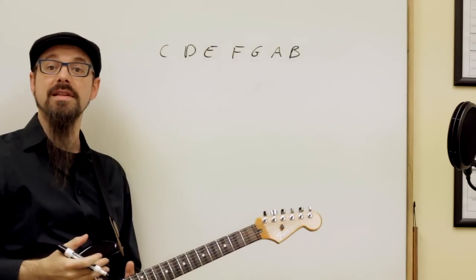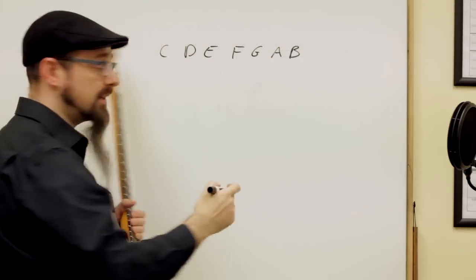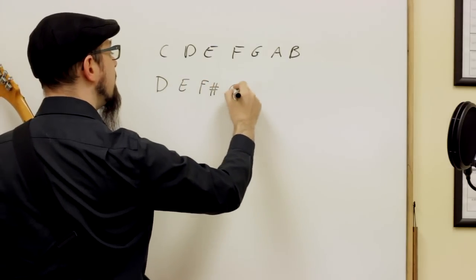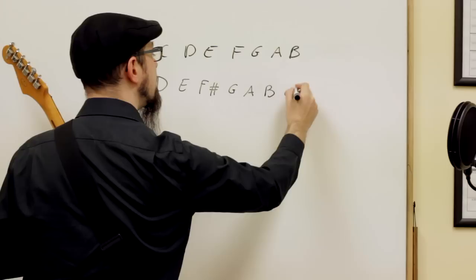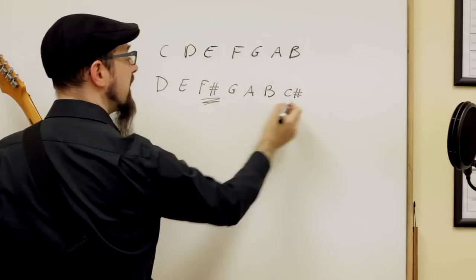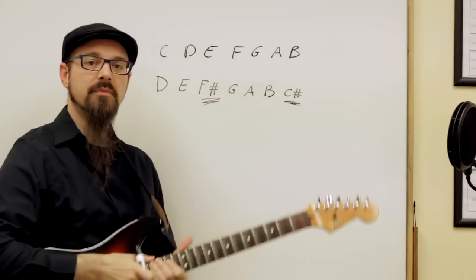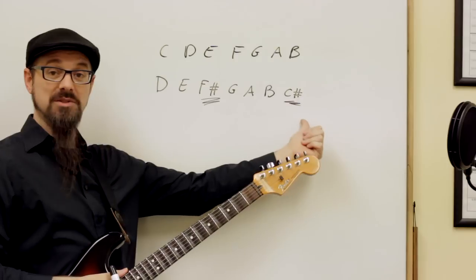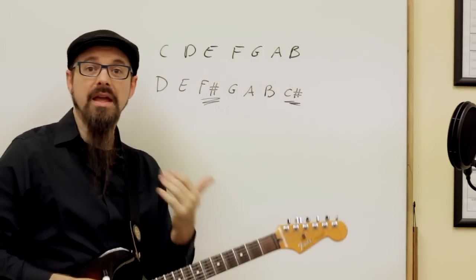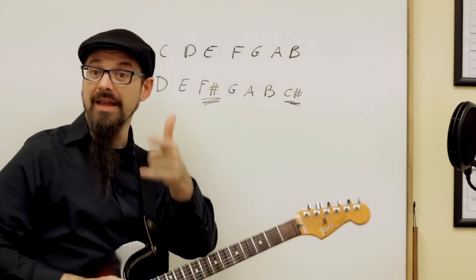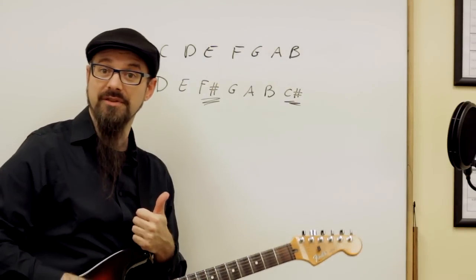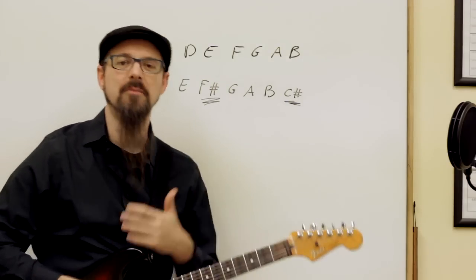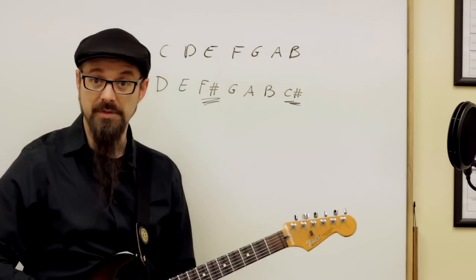But if you're working in D major, the notes are different: D, E, F sharp, G, A, B, C sharp. We have sharps here because we need to adjust the intervals so it sounds like a major scale. If you have any doubt, I have a video called Theory from Zero that covers all those things. That's function number one of sharps and flats.